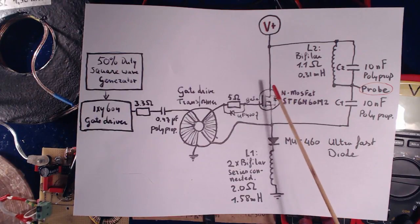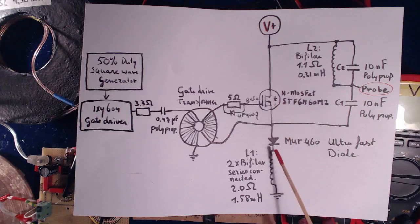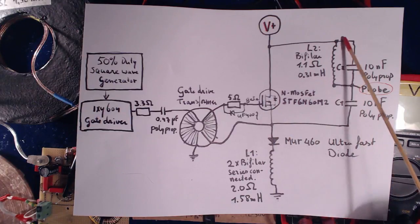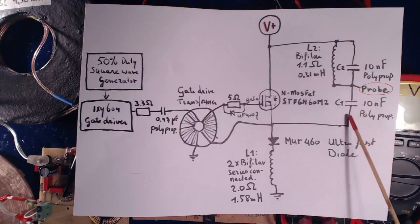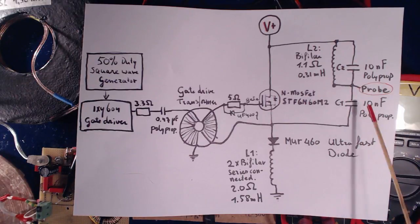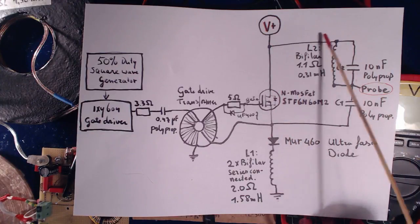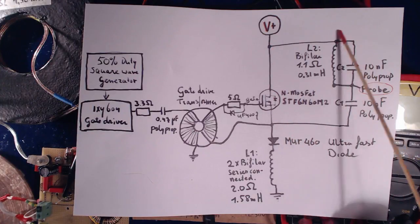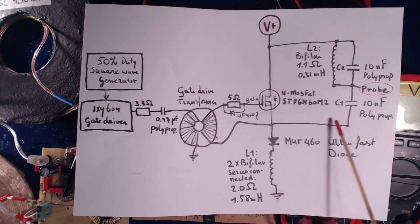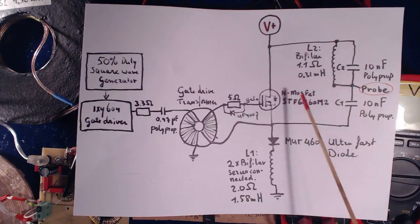When the MOSFET is switched off, we get the negative inductive spike that charges the capacitors in system, especially the C1. And when the MOSFET is turned on again, and it's conducting again, it's closing this circuit. And this provides the resonance, the series parallel resonance.